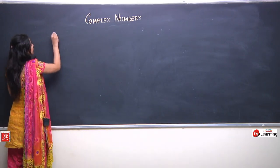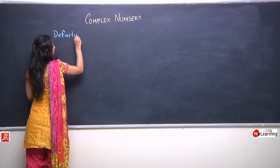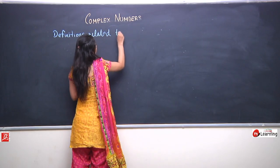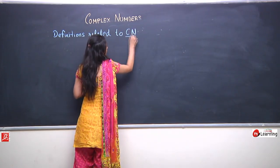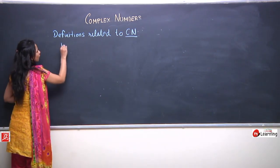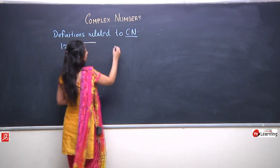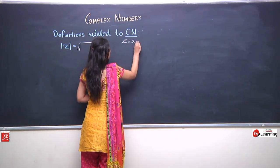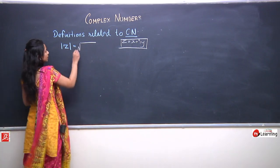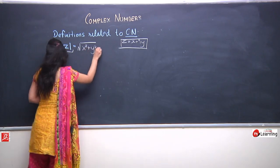Now let us understand some definitions related to complex numbers. The first definition is that of the modulus of z, which we have already discussed. If z is a complex number of the form x + iy, then the modulus of z is defined as |z| = √(x² + y²).